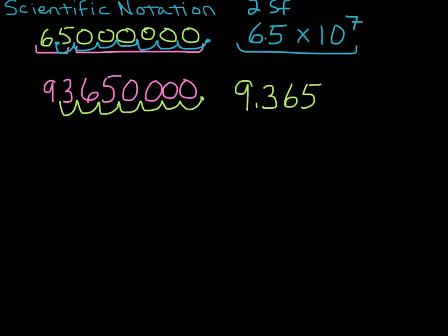And I'm going to write 9.3 and then 65. All those non-zero numbers are significant. These zeros are insignificant. So 9.365 times 10 to the seventh. That's how we would write that number in scientific notation.